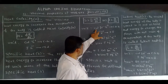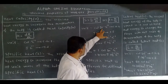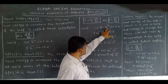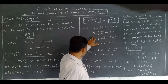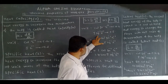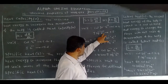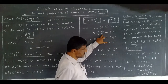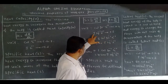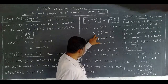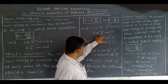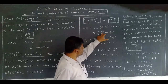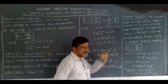In SI system: Joule, kg inverse, Kelvin inverse. The specific heat for two objects has constant values.